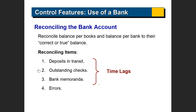Similarly, you can have outstanding checks — checks you've written to people who have not yet taken them to their bank. You subtracted the money from your books as soon as you wrote the check by debiting the expense and crediting cash, but the bank has not subtracted it yet. Those would be outstanding checks: you subtracted something from your accounting records but the bank did not.